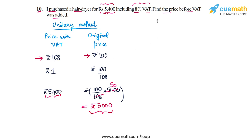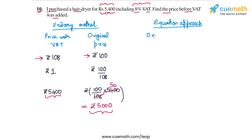Now let's arrive at the same answer using an equation approach. In this approach, we will assume the unknown — which is the original price — using some variable. So let's say that the original price of the hairdryer is rupees x.